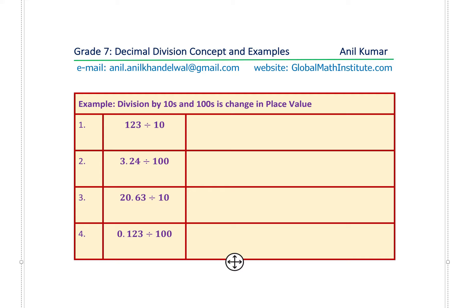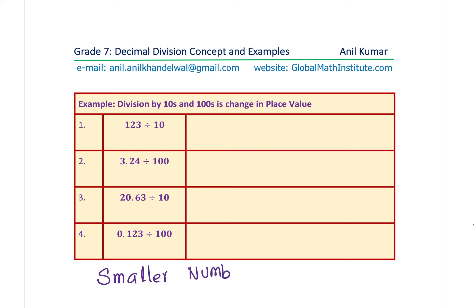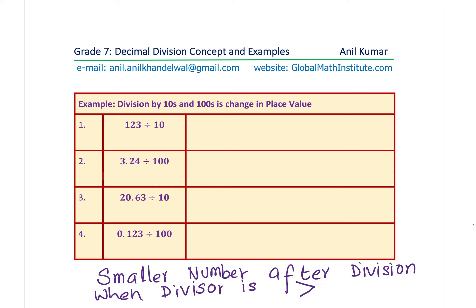Here are four questions — I'd like you to pause the video, answer these questions, and then look at my suggestions. When we divide we get a smaller number. This is true when the divisor is greater than one. In these cases we are dividing by 10, 100 — all greater than one — so we expect a smaller number. Dividing by tens and hundreds is a change in place value.